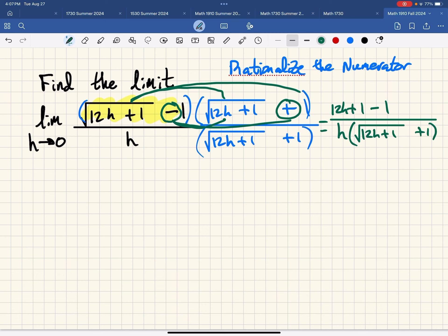Now what we have is these ones canceling and the result is the limit as h goes to 0 of 12h divided by h times the square root of 12h plus 1 plus 1.